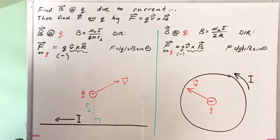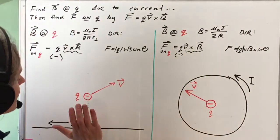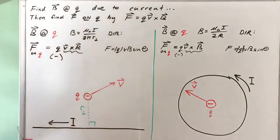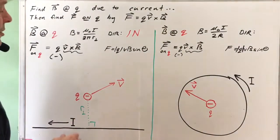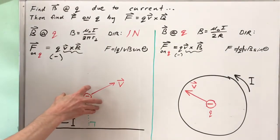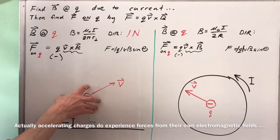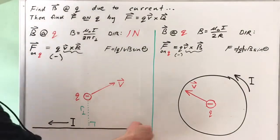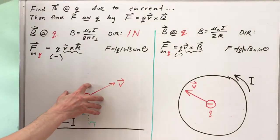Let's do this one first. I need to first find the direction of the magnetic field that this long current carrying wire exerts at a location above the wire. So I stick my thumb in the direction of the current, wrap my fingers in the direction, and those fingers will be in the direction of the magnetic field. At the location of this moving charge, the magnetic field is into the board. This is the magnetic field produced by the current carrying wire — not the magnetic field of the moving charge itself. So this charge is experiencing a force due to the magnetic field produced by this current carrying wire, which is into the board at the location of the charge.